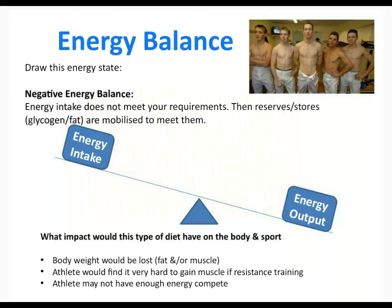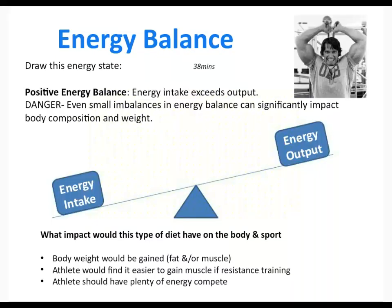If you go to negative energy balance, this is where you're using more than you're taking in. Typically this is the balance people use when they want to lose weight — particularly fat — but you could also lose muscle because you need energy to build it. Athletes find it very hard to gain muscle mass in this state. For example, jockeys spend their whole careers in negative energy balance, trying to keep weight off while staying athletic and maintaining energy levels. When a jockey retires, they just love eating again because they've been starved for so long.